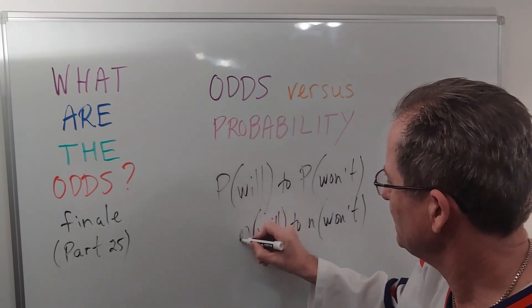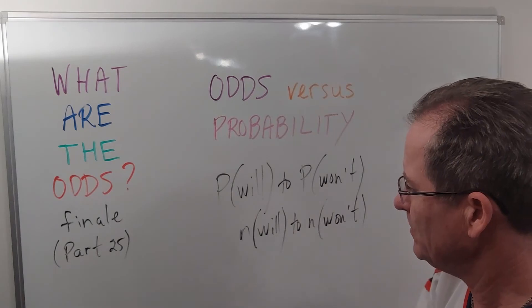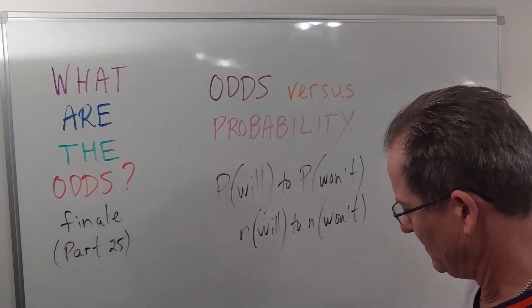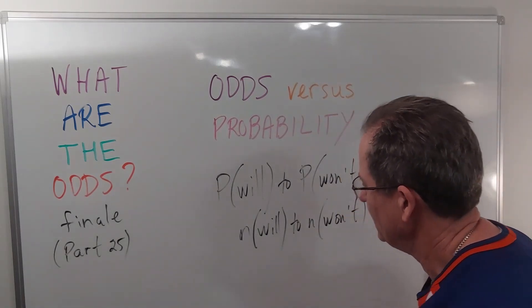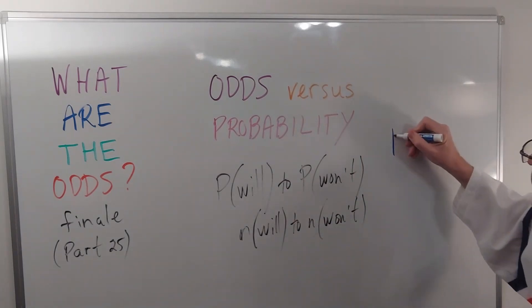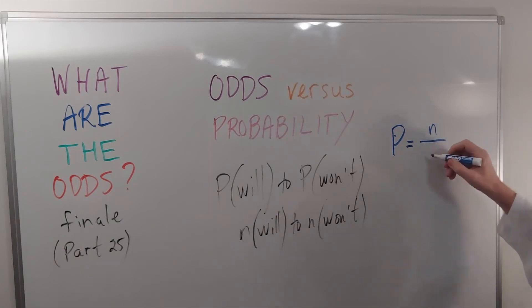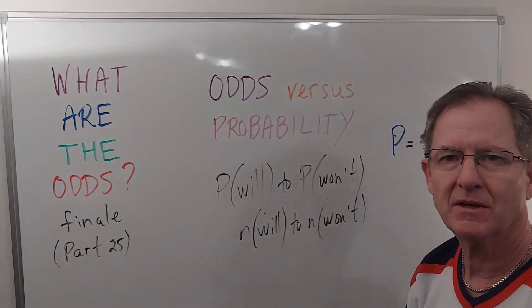That's not the same as probability, of course. Probability, as we've seen many times before, is the number that you want divided by the total number of times it could occur.